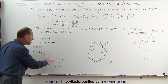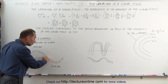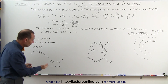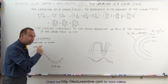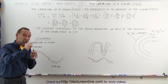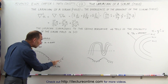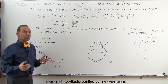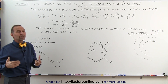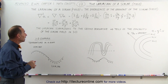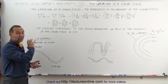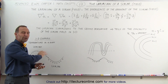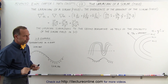Here we can see that even though the temperature is decreasing, if the Laplacian is positive, the decrease is becoming smaller and smaller. Eventually it will bottom out and then the temperature will begin to increase. So again, the best way to think about the Laplacian is that it's simply the second derivative of the scalar function.